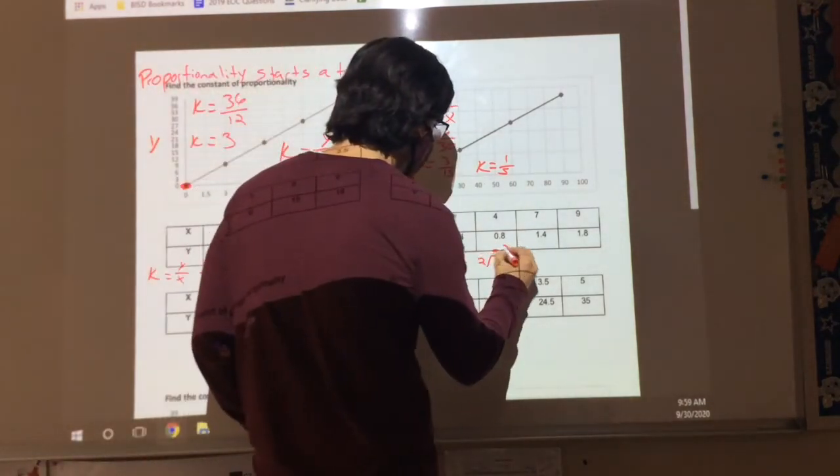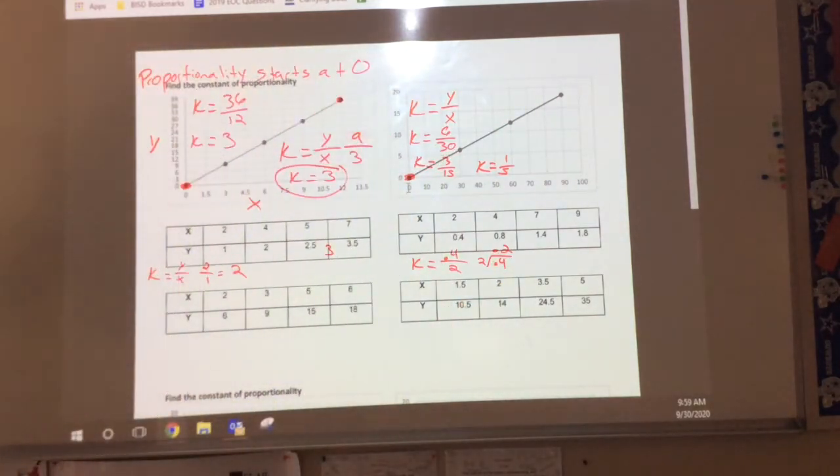0.2. 0.2? Do we agree? Yeah. So that means that every time I increase, I'm going up by 0.2. No. Okay? Well, this one.